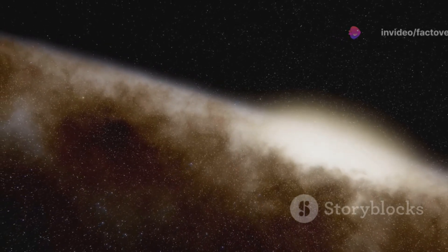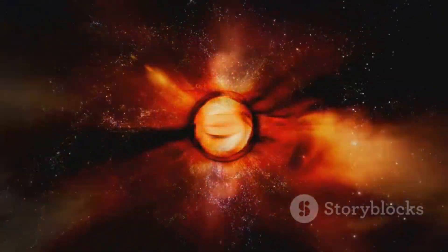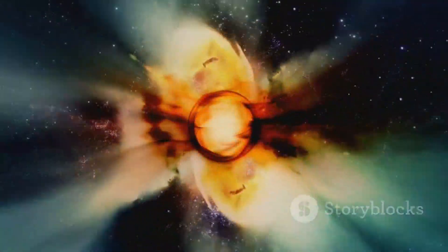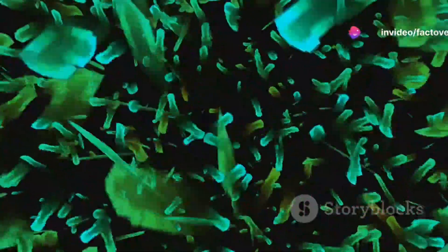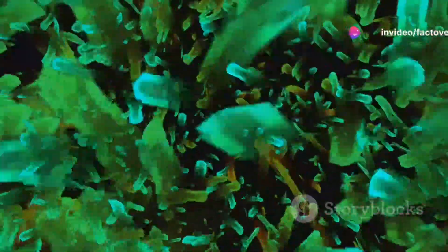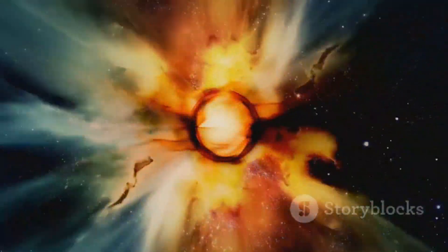However, life on Earth has proven remarkably resilient over billions of years, surviving asteroid impacts, volcanic eruptions, and ice ages. Some forms of extremophile life, such as bacteria living deep underground or in hydrothermal vents, might be shielded from the worst effects of a GRB, offering a glimmer of hope for life's persistence even in the face of such a cosmic catastrophe.